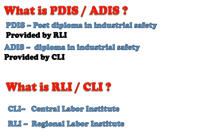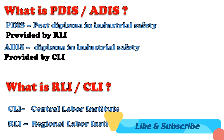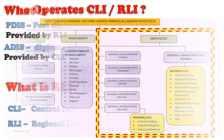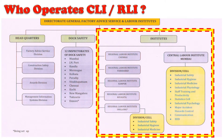PDIS means Post Diploma in Industrial Safety, provided by RLI institutes. ADIS means the Diploma in Industrial Safety, provided by CLI. CLI means Central Labour Institute, located in Mumbai. RLI means Regional Labour Institute, of which there are five. These institutes come under the Directorate General, Factory Advice Service and Labour Institute — DG FASLI.